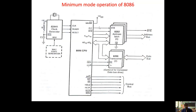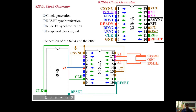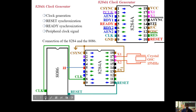Those three are: ready, clock, and reset. The 8284 — the clock generator IC number is 8284 — is communicated to 8086 with the help of three pins: reset pin, clock pin, and ready pin. Pin number 8 of the 8284 is the clock pin, and this clock of 8284 is connected to the processor clock.